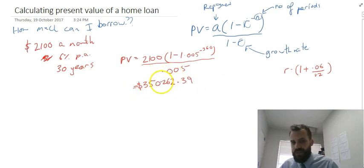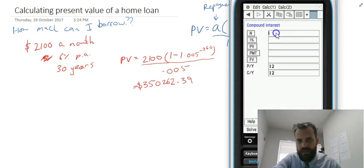Let's test this out on our calculator, make sure I'm not telling you lies. Alright, number of periods, 360, interest rate, 6%, present value, that's what we're trying to calculate.